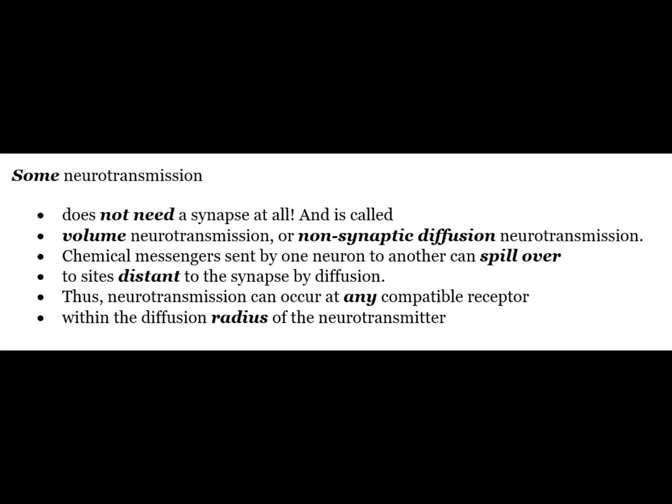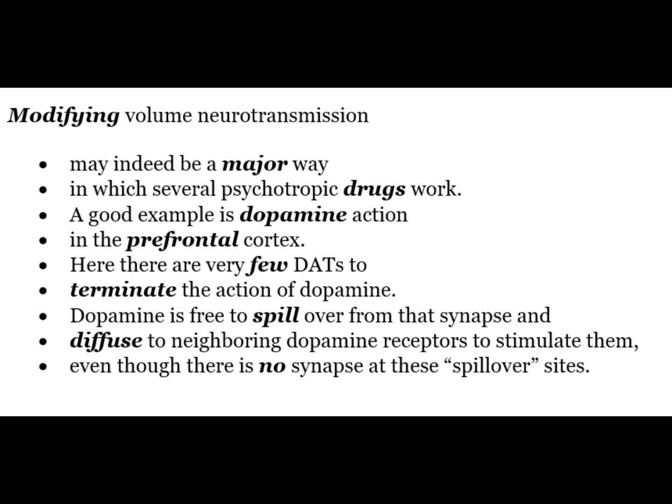Some neurotransmission does not need a synapse at all and is called volume neurotransmission or non-synaptic diffusion neurotransmission. Chemical messengers sent by one neuron to another can spill over to sites distant to the synapse by diffusion. Thus neurotransmission can occur at any compatible receptor within the diffusion radius of the neurotransmitter.